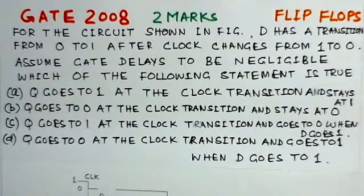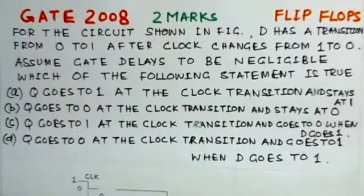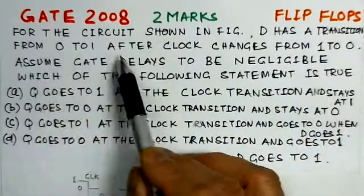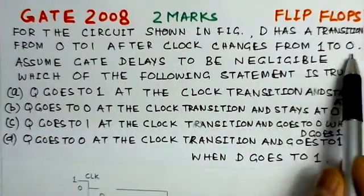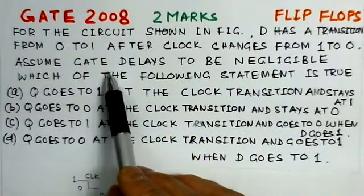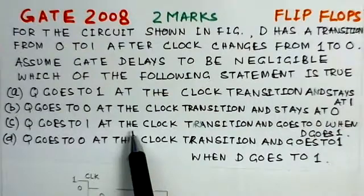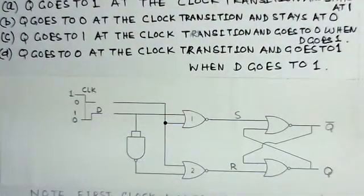This problem is the fourth and last problem in the set of problems on flip-flops. It is on the flip-flop along with associated digital circuitry connected to it. This is a GATE 2008 two-mark question. We have to find out which of the four given statements is true, based on the circuit shown in the figure.